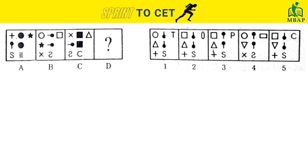Let's look at another question. This element rotated 90 degrees clockwise and became two on this side. According to that, this element should transform similarly — which is happening in options one and two, but not in option three or four. So options three and four are eliminated.